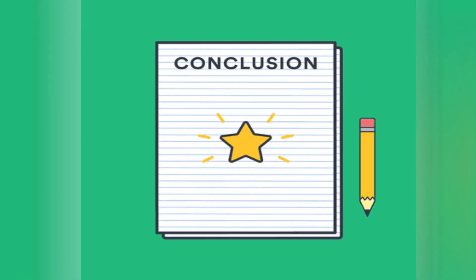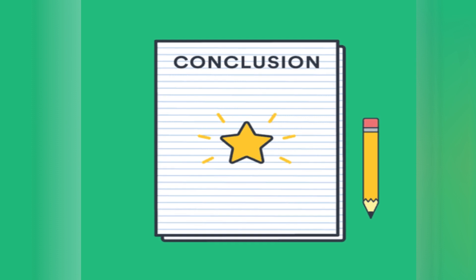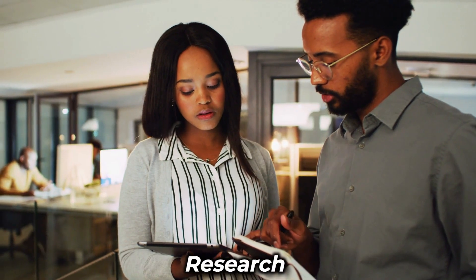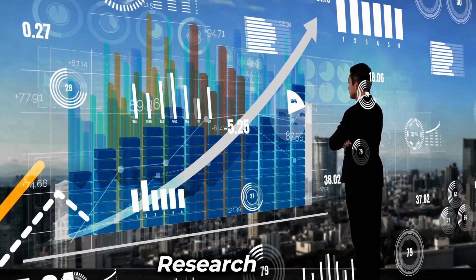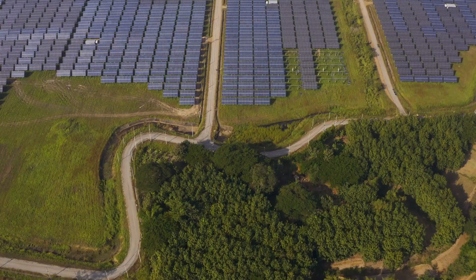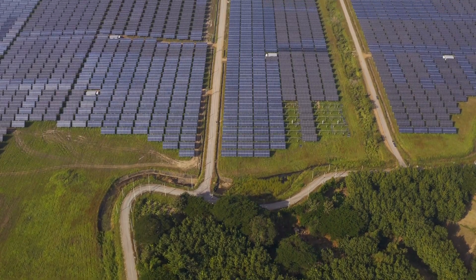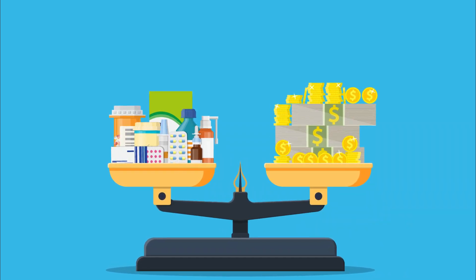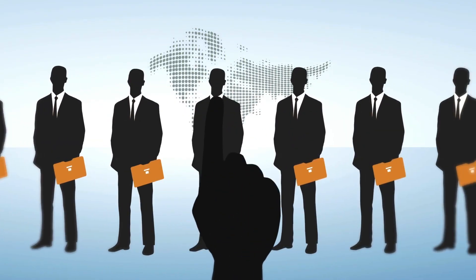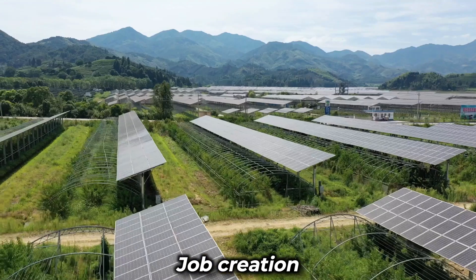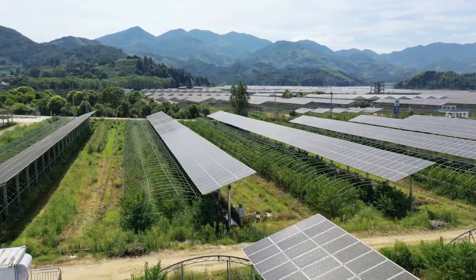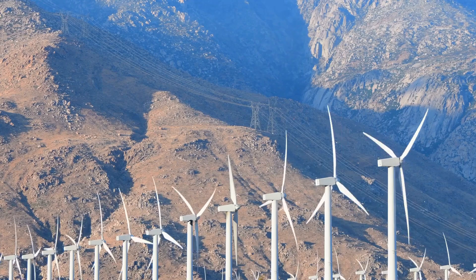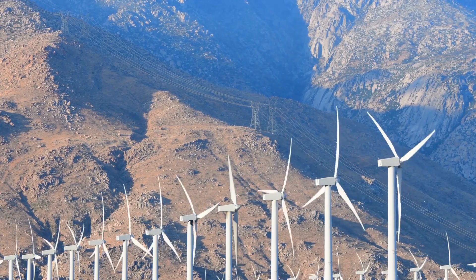In conclusion, starting a solar farm is a complex and challenging process. But with the right planning, research, and resources, it can be a profitable and sustainable venture. The benefits of solar farming include clean and renewable energy, cost-effectiveness, high energy output, diverse applications, and job creation. However, there are also several challenges associated with solar farming, including the initial costs, weather dependency, maintenance needs, environmental impact, and intermittency of energy production.